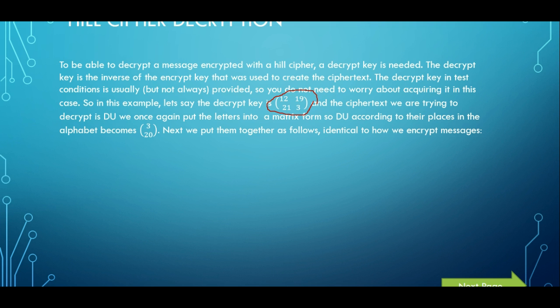And the message that we are trying to decrypt, our ciphertext trying to decrypt, is D and U. So we do the same thing as we did before in the encryption where we convert that into a matrix by using the corresponding place it is in the alphabet. So that is 3 and 20 as shown here. So just like before we put these two things together, the key and the newly created matrix, to do the matrix mathematics.